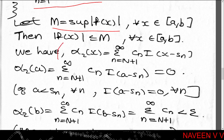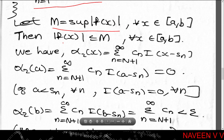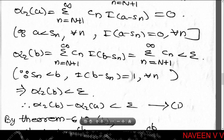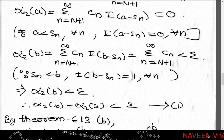We have α₂(x) = Σ(n=N+1 to ∞) cₙ · I(x - sₙ). Since α₂(a) = Σ(n=N+1 to ∞) cₙ · I(a - sₙ) = 0 for each n, and α₂(b) = Σ(n=N+1 to ∞) cₙ · I(b - sₙ) = Σ(n=N+1 to ∞) cₙ, and since Σ(n=N+1 to ∞) cₙ < ε, we have α₂(b) < ε, therefore α₂(b) - α₂(a) < ε.